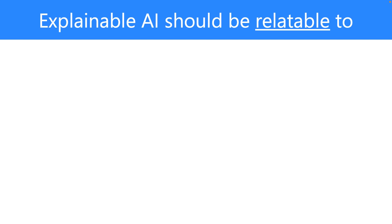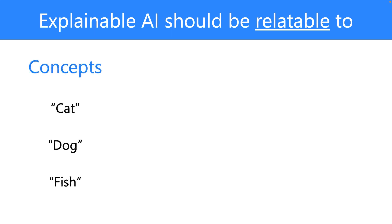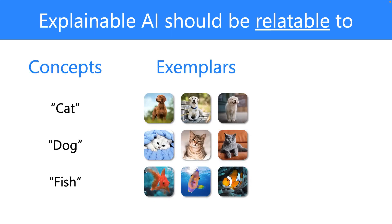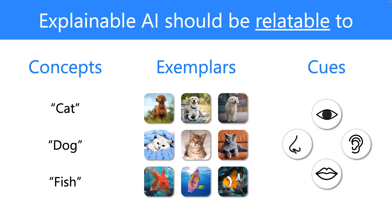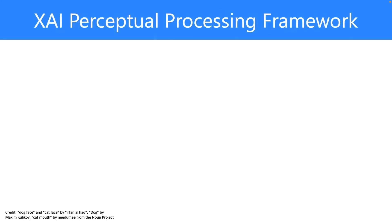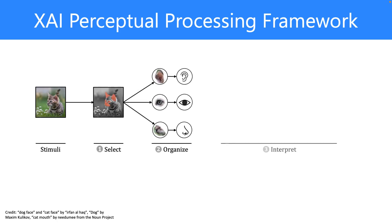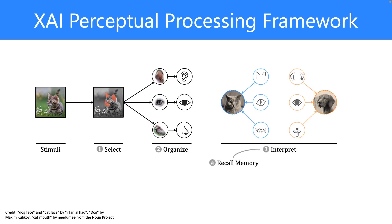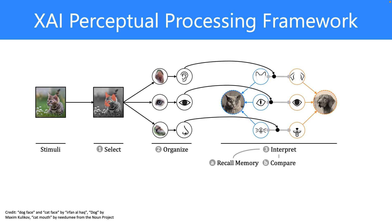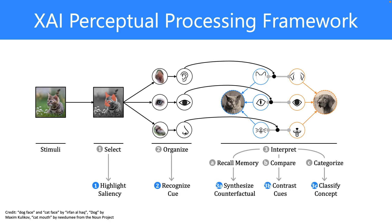To mitigate these problems, we argue that explainable AI should be relatable to abstract concepts, examples that are representative to the concept class, and cues that describe in terms of semantics. In this example, we are given the stimuli, we select salient parts, organize them into cues, and interpret them by recalling relevant concepts and associated cues, comparing their similarity to the stimuli, and categorizing two concepts. We propose the XCA Perceptual Processing Framework with corresponding capabilities.